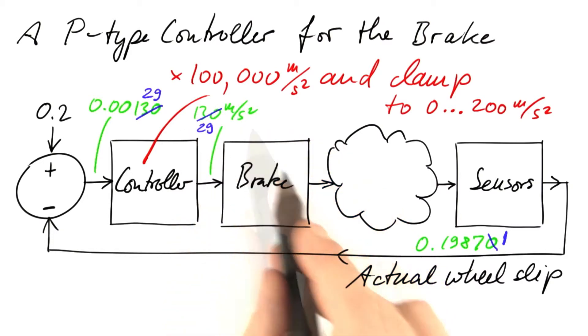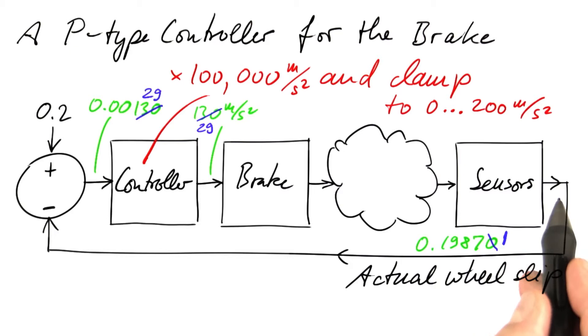We are braking less. And as we are braking less, hopefully, the slip is going to decrease again. So this looks like a stable equilibrium, at least from one side. But obviously, this also works when the actual wheel slip is a little too low.